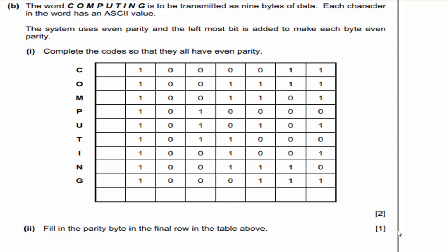The word 'computing' is to be transmitted as nine bytes of data. Each character has an ASCII code value. The system uses even parity and the leftmost bit is added to make each byte even parity. We need to know it's even parity. We'll also look at a practice problem where it doesn't tell you if it's even or odd — and we'll figure that out too.